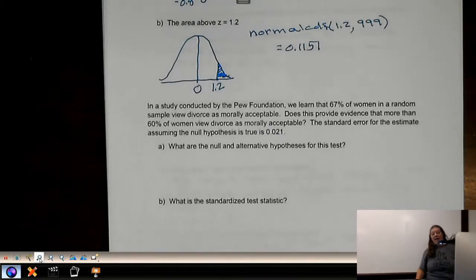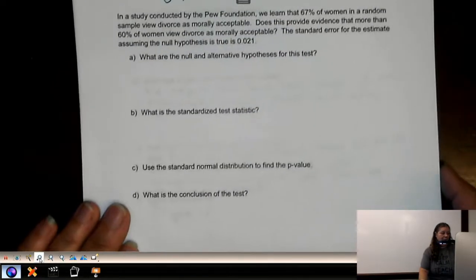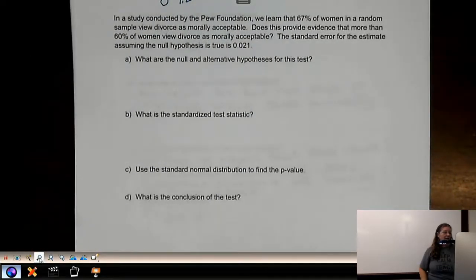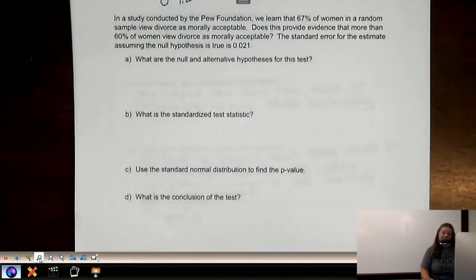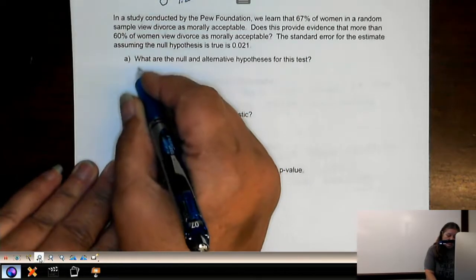So the next one, we actually are doing a hypothesis test. So in a study conducted by the Pew Foundation, we learned that 67% of women in a random sample view divorce as morally acceptable. Does this provide evidence that more than 60% of women view divorce as morally acceptable? The standard error for the estimate, assuming the null hypothesis is true, is 0.021. Now, we haven't learned how to find the standard error yet, which is why we are giving it to you.